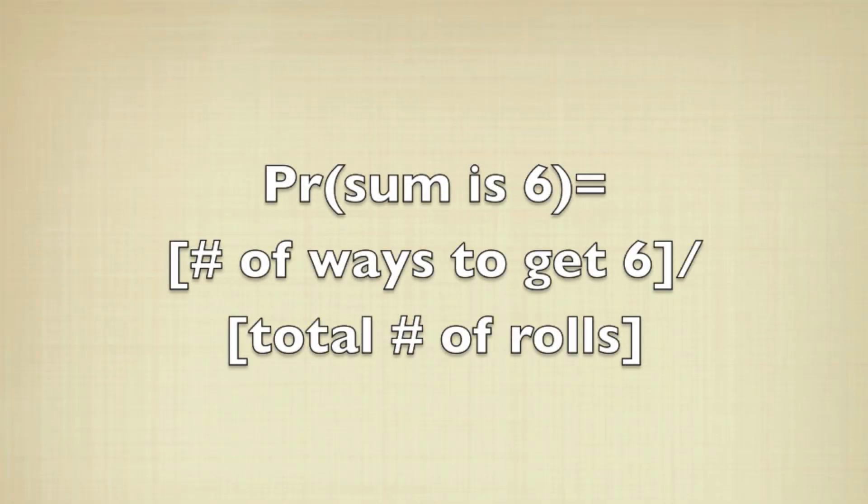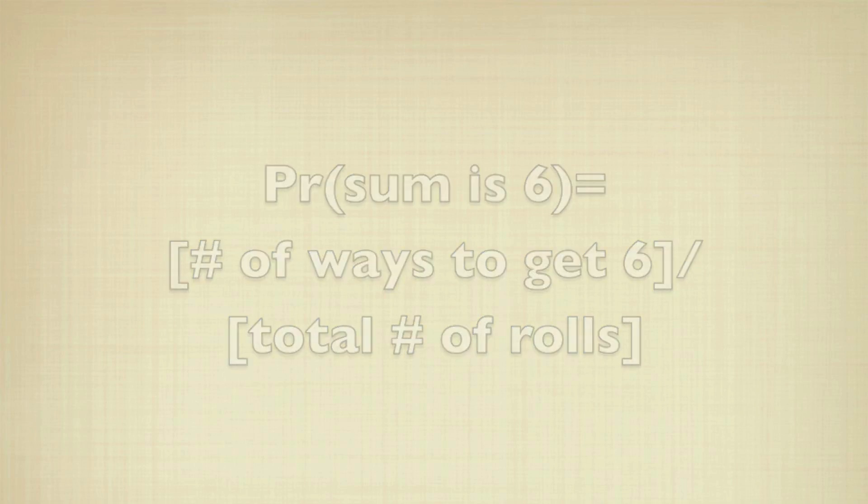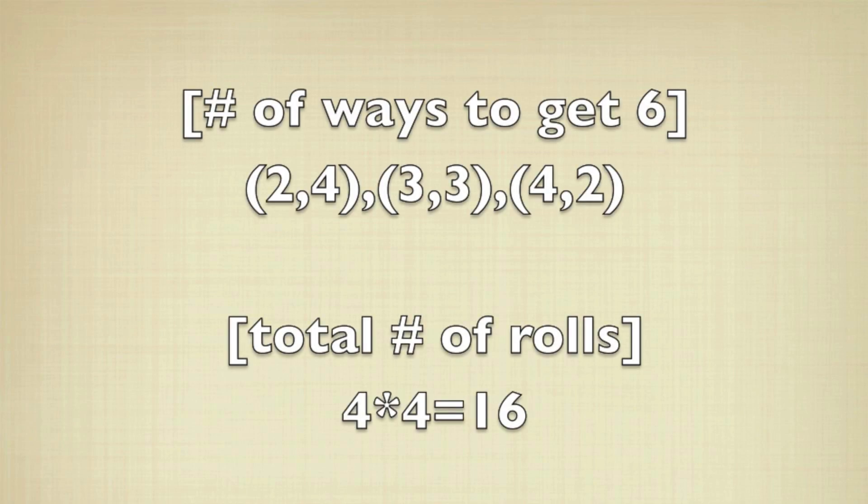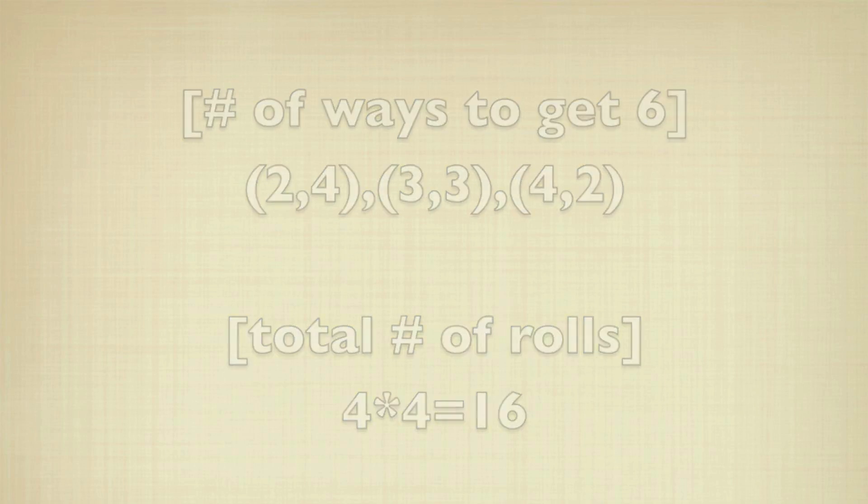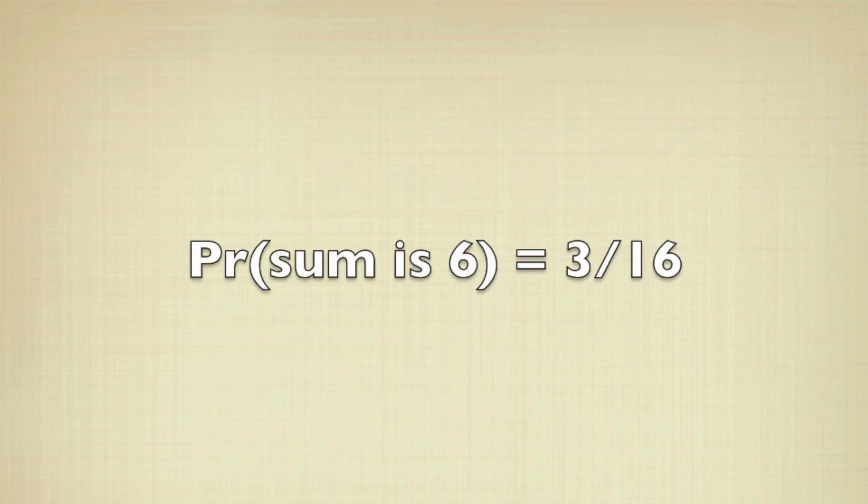According to what we just said, the probability that the sum is six is just going to be the number of ways we can get a six on the dice divided by the total number of rolls possible. There are three ways you can add the dice up to get six and there are 16 total rolls. So the probability that the sum is going to be six is going to be three out of 16.